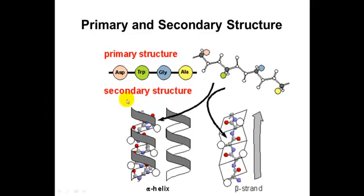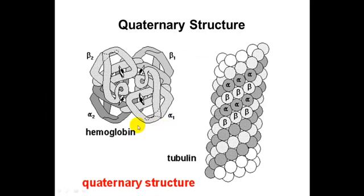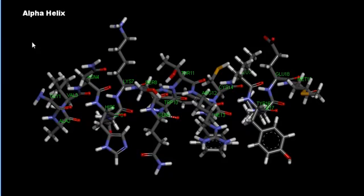There are two elements of secondary structure discovered by Linus Pauling: the alpha helix, seen a lot in hemoglobin, and the beta strand or beta pleated sheet. Tertiary structure is the overall folding of the protein, which may include beta pleated sheets and alpha helices. The fourth level is quaternary structure — hemoglobin has four subunits that fit together, and tubulin has alpha and beta subunits that fit together.